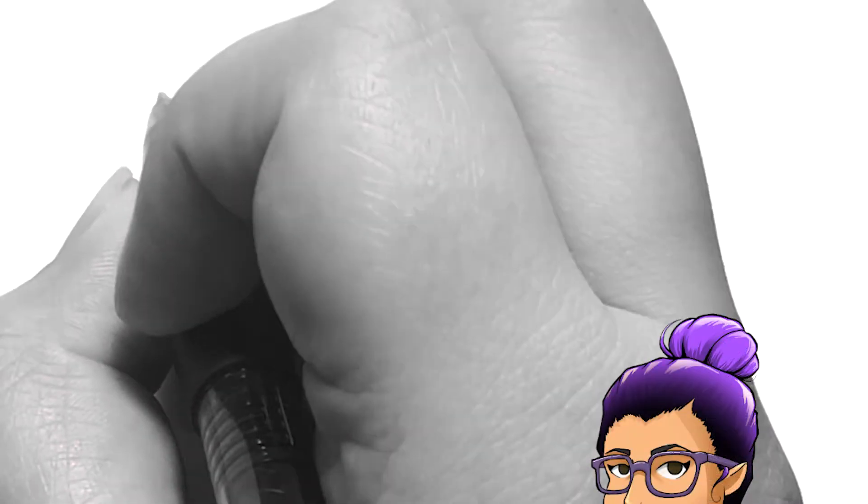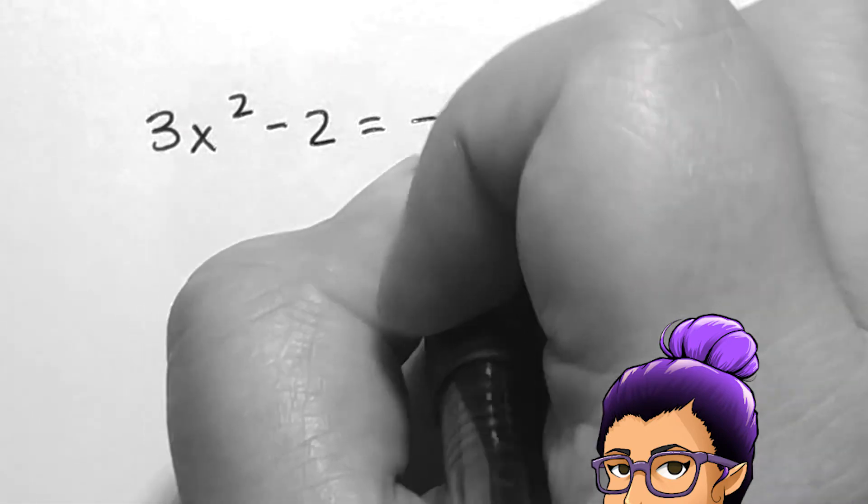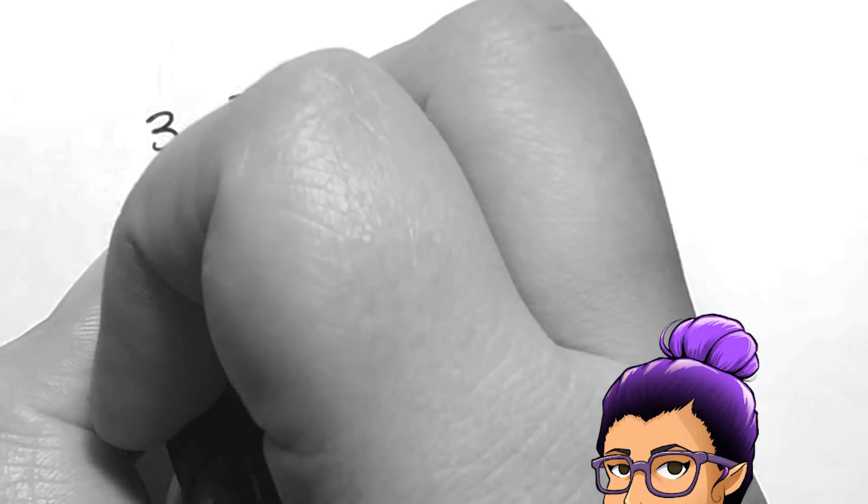If we now have that 3x squared minus 2 equals negative 5x, we'll add 5x to both sides so that we can use the zero product rule.